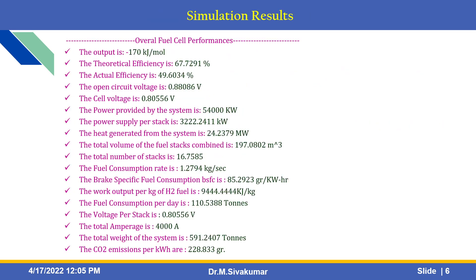These are the results obtained after executing the MATLAB script. In the command window, we can see the overall fuel cell performance: the output is minus 170 kilojoules per mole, theoretical efficiency is 67%, actual efficiency is 49%, open circuit voltage is 0.88, and the cell voltage is also shown.